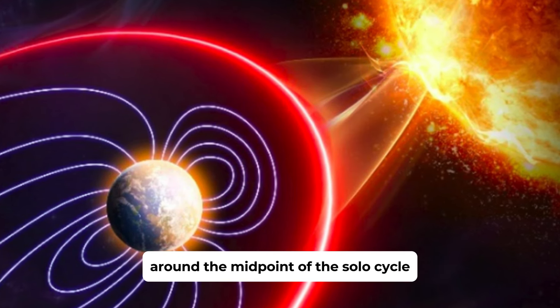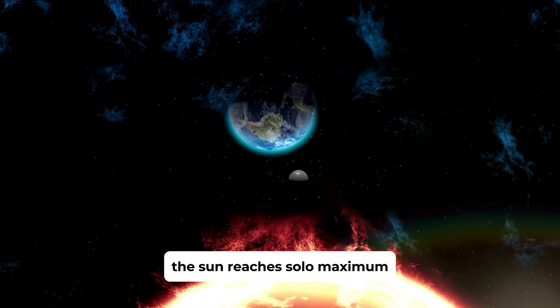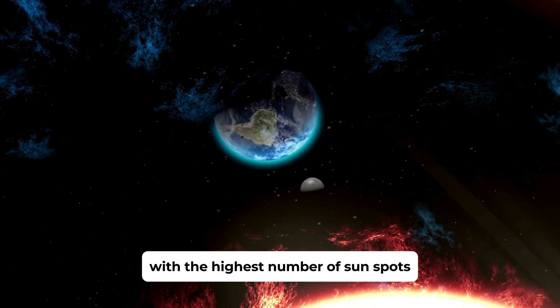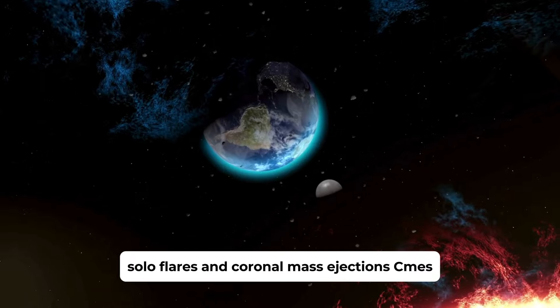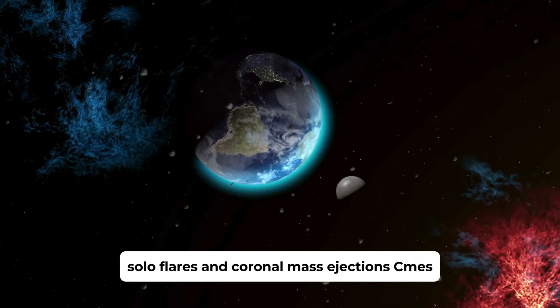Around the midpoint of the solar cycle, the Sun reaches solar maximum, a period of peak activity with the highest number of sunspots, solar flares, and coronal mass ejections (CMEs).